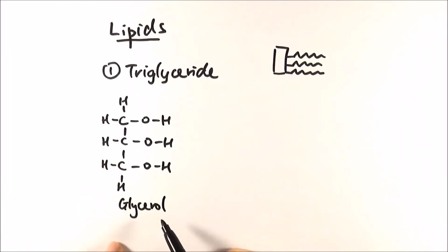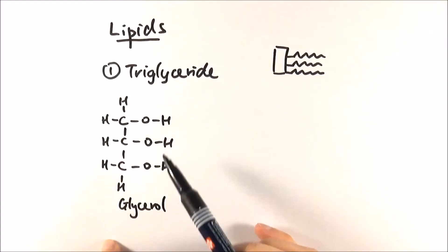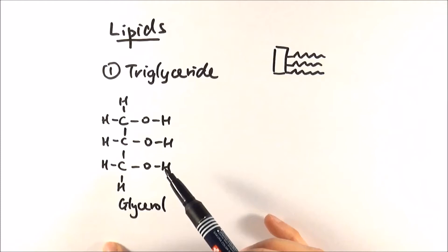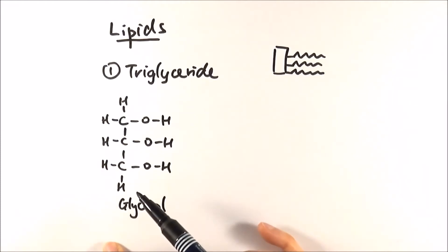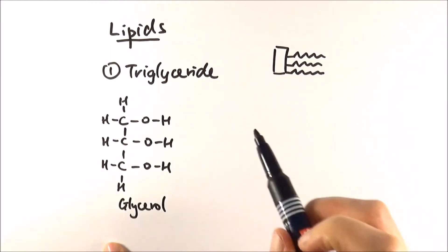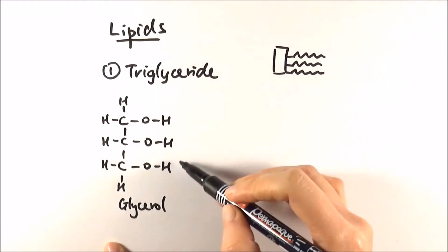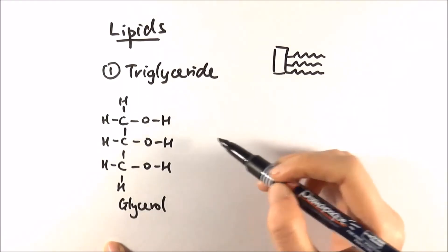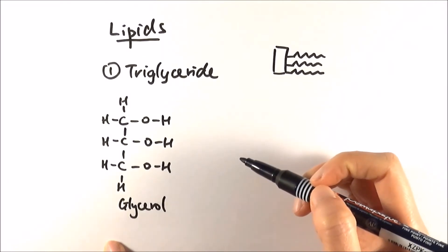Now it ends with -ol, meaning it's an alcohol, an organic alcohol. What makes it the alcohol part is the hydroxyl group at the end. It's made up of three carbon atoms and three hydroxyl groups, and obviously hydrogen that sticks out on the other sides. Each of these three bits connects to three fatty acids, so it reacts with them.